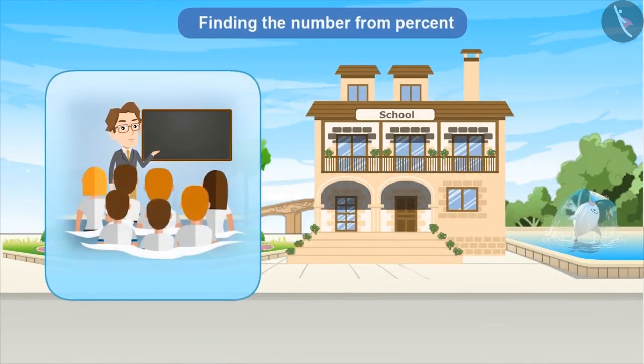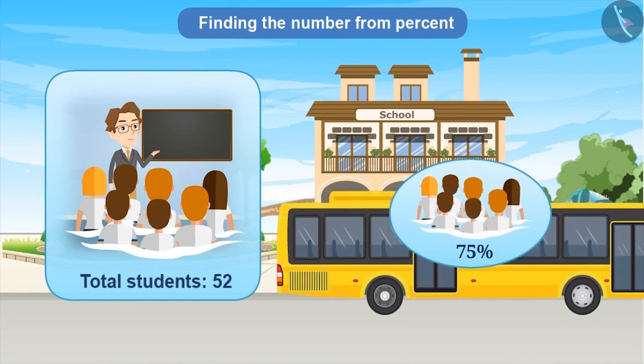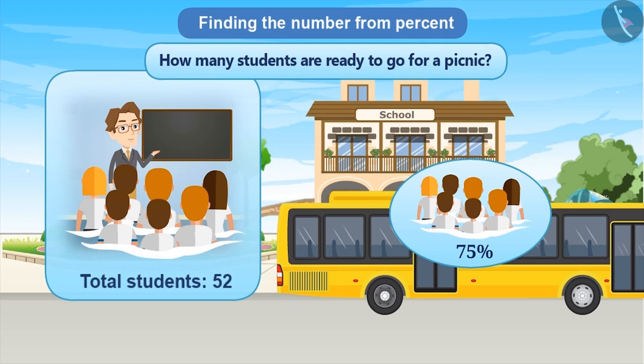Suppose a class has 52 students, out of which 75% are ready to go for a picnic. So, tell me how many students are ready to go for a picnic?